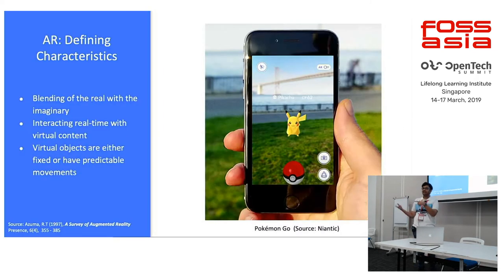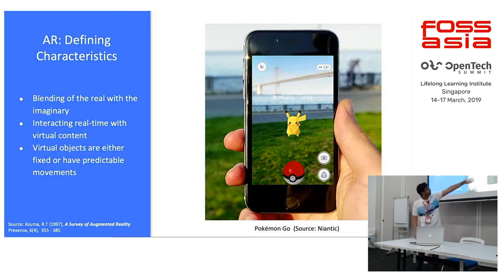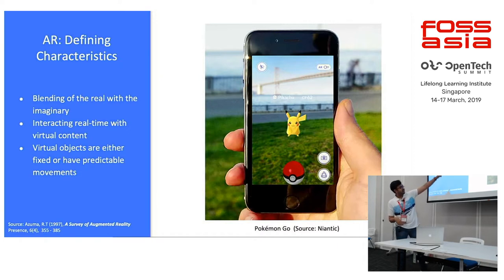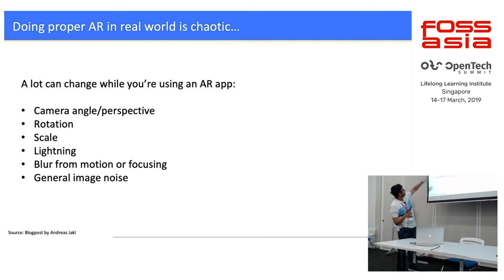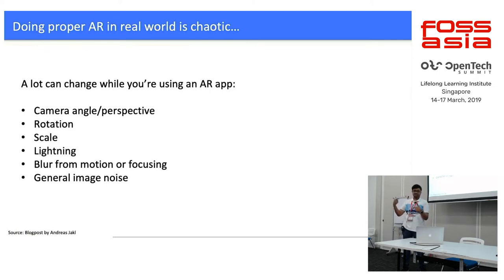The defining characteristics of an ideal AR scenario are blending the real with the imaginary — the most famous example probably being Pokemon Go, where you see Pikachu in the real world and interact with it. The virtual character you position must exhibit predictable behavior; placing a chair in a room shouldn't result in it floating around. The real world is chaotic with unpredictable camera movements, blur, image noise, and lighting changes, but all these should be handled effectively by the application — this is where computer vision comes in.